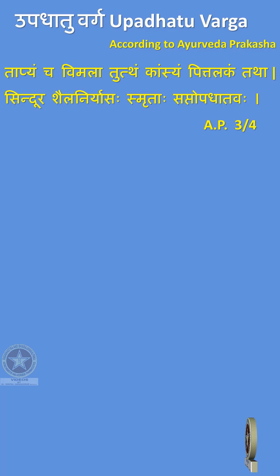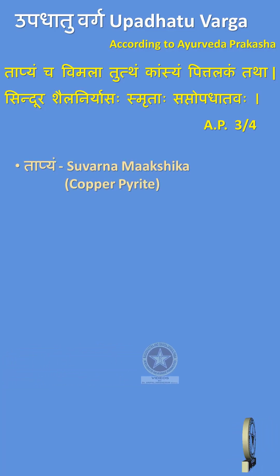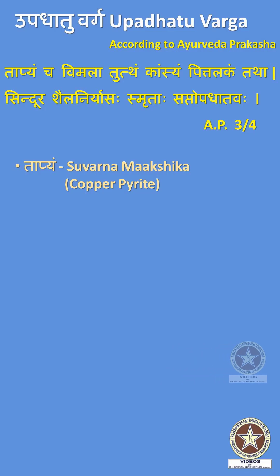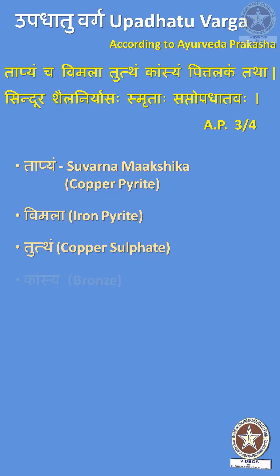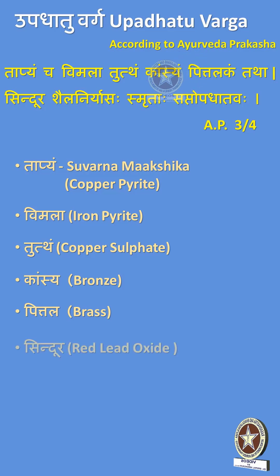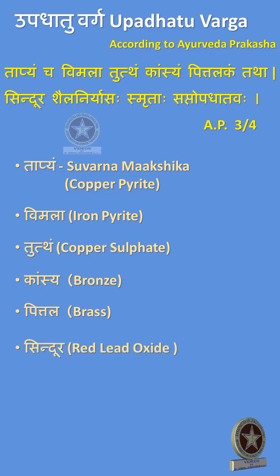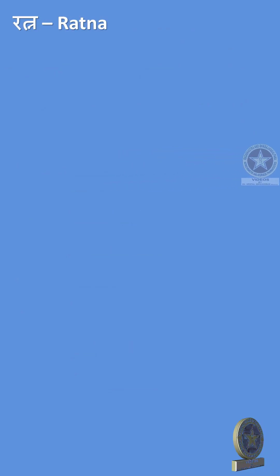The 7 Upadhatu drugs are: Tapyam (Suvarna Makshika, that is Copper Pyrite), Vimala (Iron Pyrite), Tuttam (Copper Sulphate), Kansyam (Bronze), Pittala (Brass), Sindura (Girisindura, Red Lead Oxide), and Shailaniriyasah, which is nothing but Shilajatu.